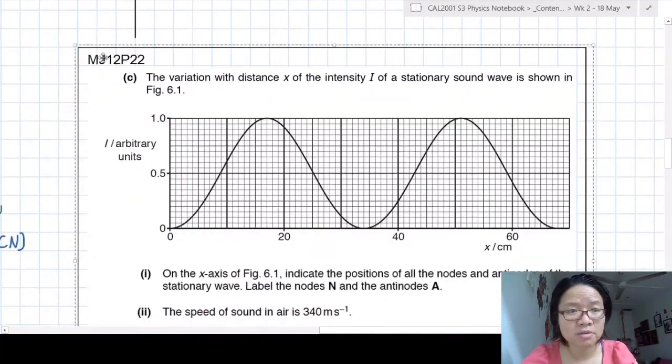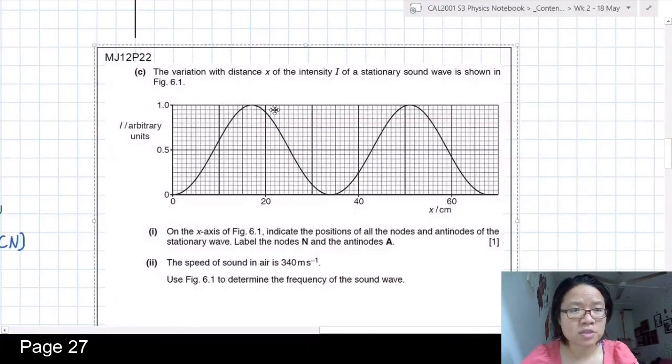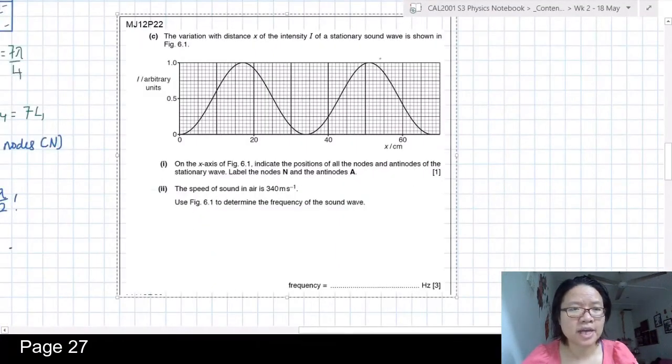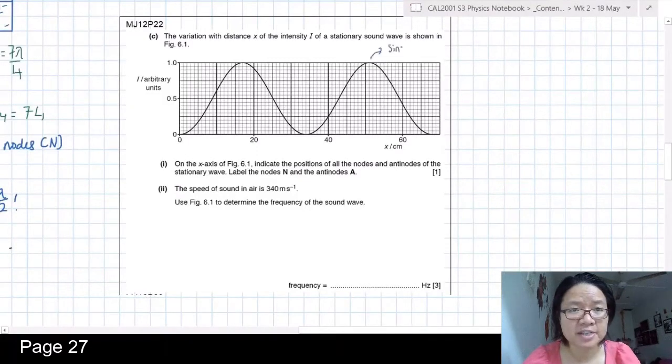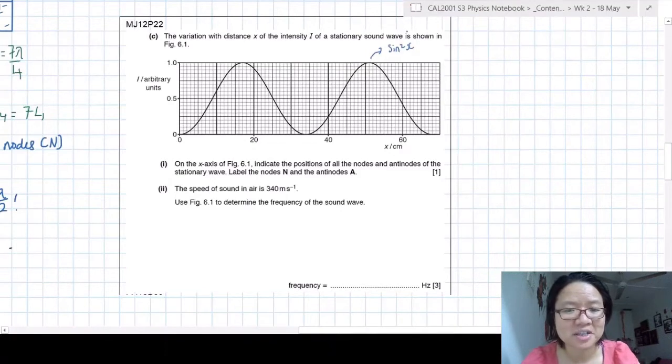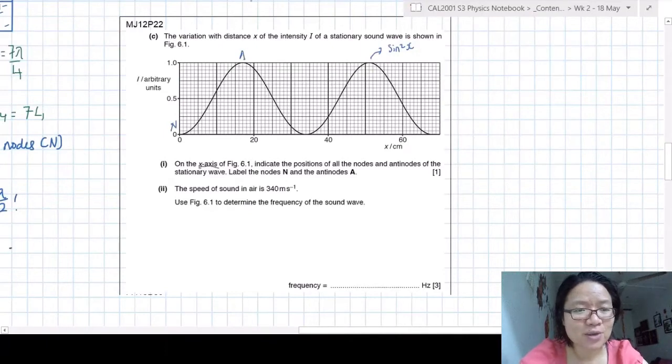So for this question, you will notice that this is a variation of intensity of the sound wave. Actually, if you want to know, this shape is sine squared. Think about it. Why is it sine squared? If cannot, never mind, you hang on first. So the nodes and anti-nodes I will label.